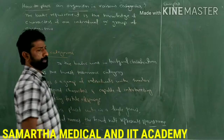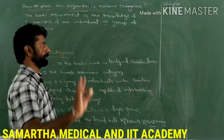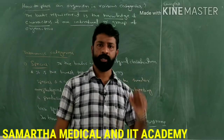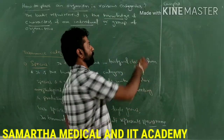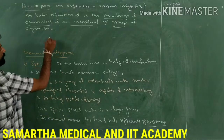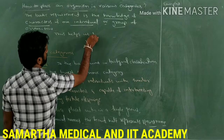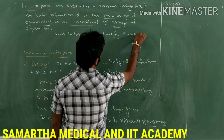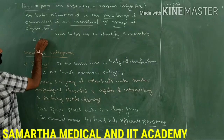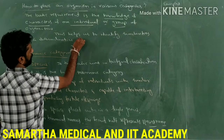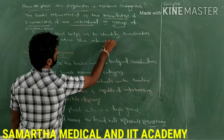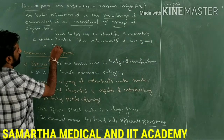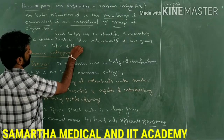In order to place an organism in various categories of the taxonomical hierarchy, the basic requirement is the knowledge of the characters of that particular individual. If you have knowledge of the characters of an individual organism or a group of such organisms, it helps us to identify similarities and dissimilarities between individuals of one group or between different groups.